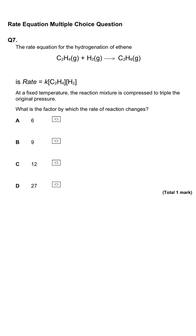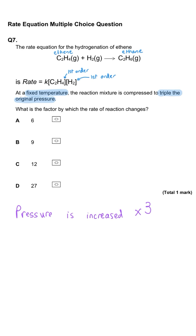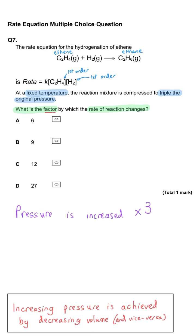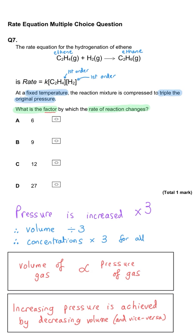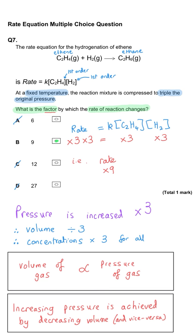The reaction between ethene gas and hydrogen gas to produce ethane has a rate equation that is first order with respect to ethene and first order with respect to hydrogen. At fixed temperature the reaction mixture is compressed to triple the original pressure. Tripling the pressure divides the volume by three, effectively tripling the concentration of both reactants. Tripling the first order ethene triples the rate, and tripling the first order hydrogen triples it again, giving an overall factor of nine. So B is correct.